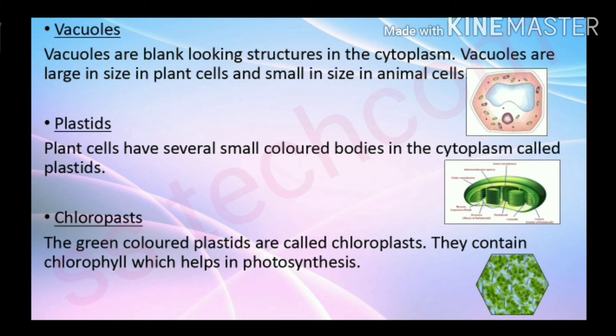Vacuoles are blank-looking structures in the cytoplasm. Vacuoles are large in plant cells and small in animal cells. Plastids: plant cells have several small colored bodies in the cytoplasm called plastids.